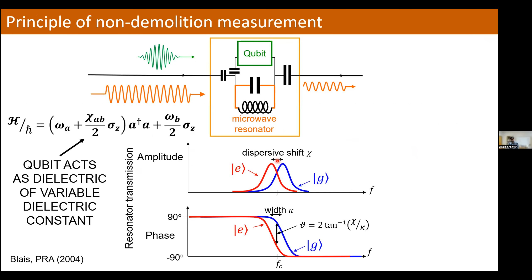In our circuit QED architecture for superconducting qubits, the measurement of the qubit is done by sending microwave drives to the microwave resonator that's coupled to the qubit and looking at the transmitted response. The qubit essentially shifts the frequency of the resonator by a frequency we call the dispersive shift chi, which is typically comparable to the linewidth of the resonator kappa. If we drive right at the center of these two frequencies we can get one of two possible phase shifts to the transmitted signal. We associate one phase with the ground state and the other phase with the excited state, and by measuring that phase we know what the qubit state is.